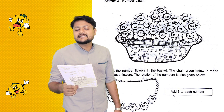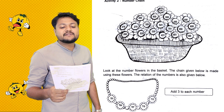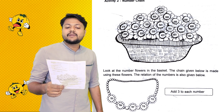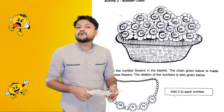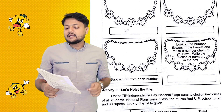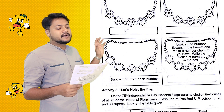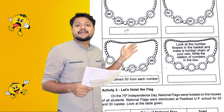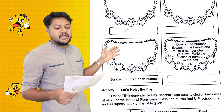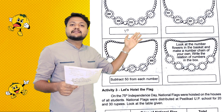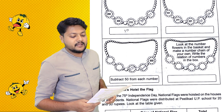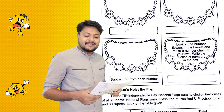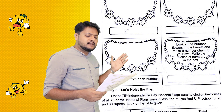Some numbers are missing in the chain. Can you find them? Write the relation of the numbers in the box. Flowers once taken should not be used again. In the chain: 290, 300, 310 — add 10 each time — 320, 330.